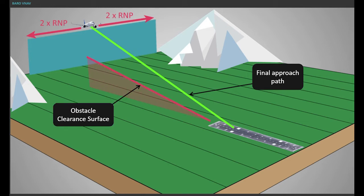The final approach segment provides obstacle clearance by an obstacle clearance surface, OCS, which is defined by the vertical error budget, VEB.